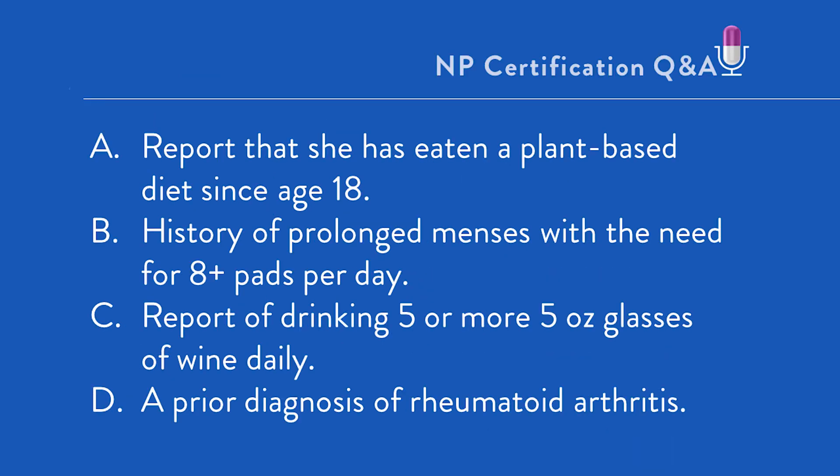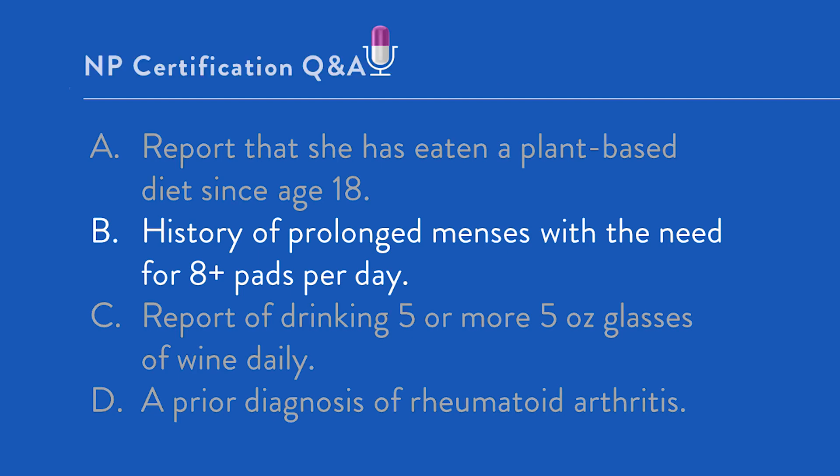What's the most common reason for iron deficiency anemia in a woman of reproductive age, particularly reporting heavy menses with resulting fatigue and microcytic hypochromic anemia? The best answer is option B: history of prolonged menses with the need for 8-plus pads per day. That is a common history in a person with iron deficiency anemia, where the iron deficiency comes from excessive menstrual blood loss.